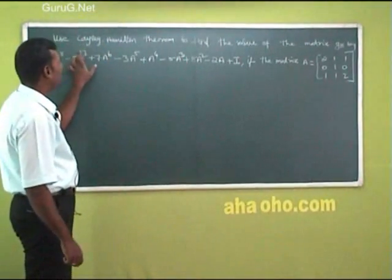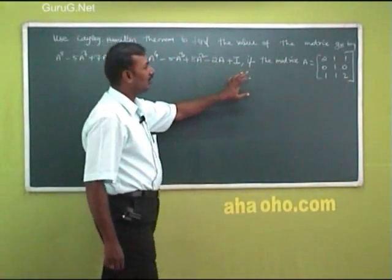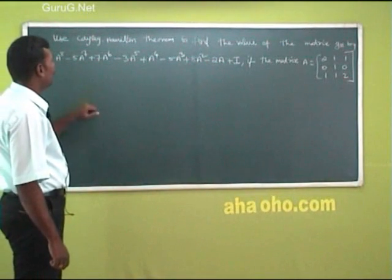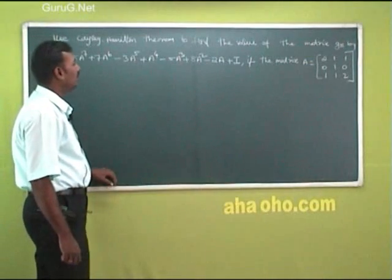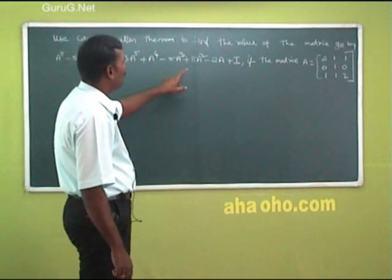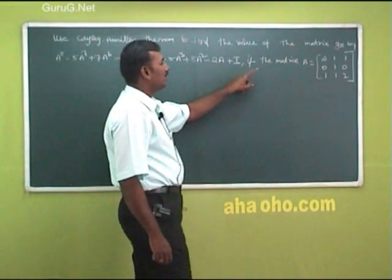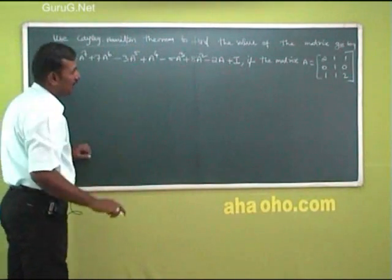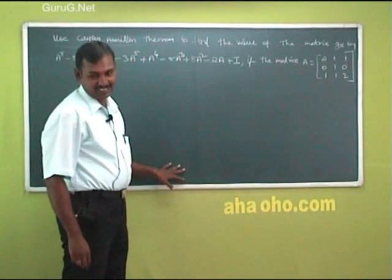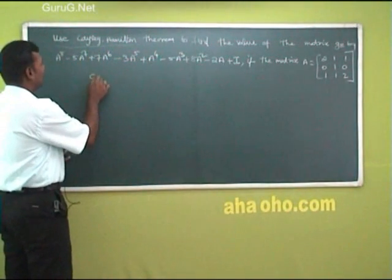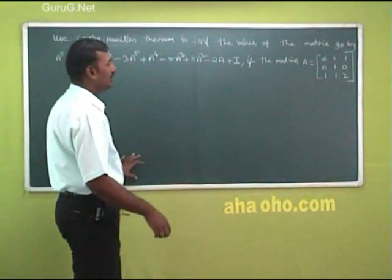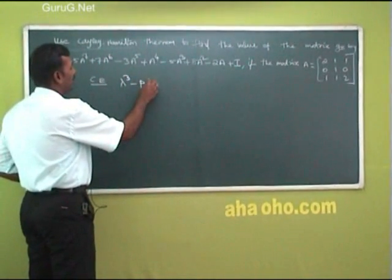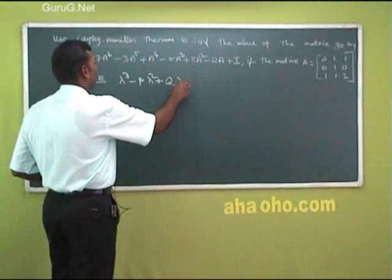The next problem: use the Cayley-Hamilton Theorem to find the value of the matrix expression A⁸ − 5A⁷ + 7A⁶ − 3A⁵ + A⁴ − 5A³ + 8A² − 2A + I, given the matrix A. First we need the characteristic equation. The given matrix is of order 3×3.